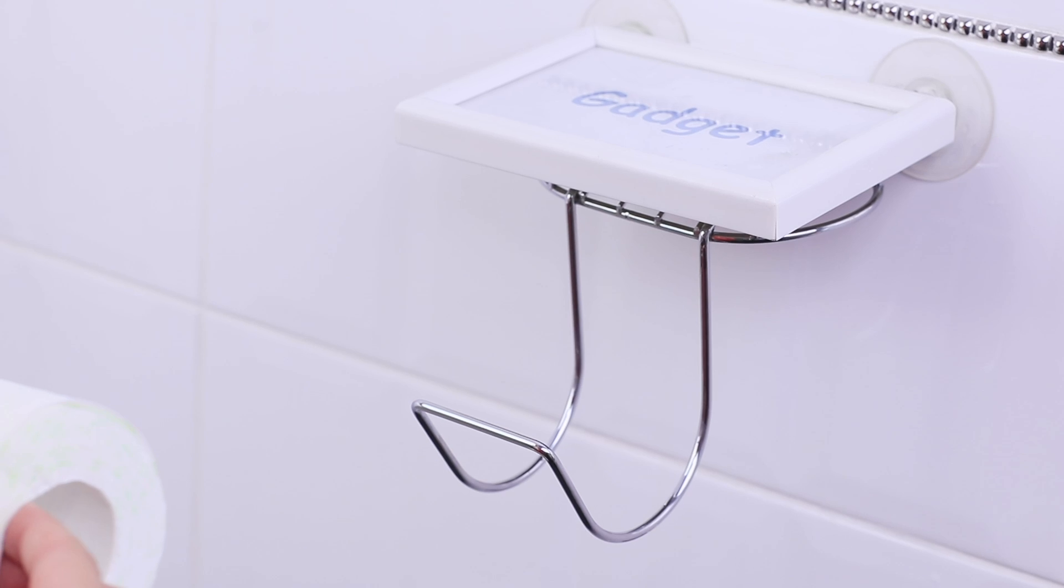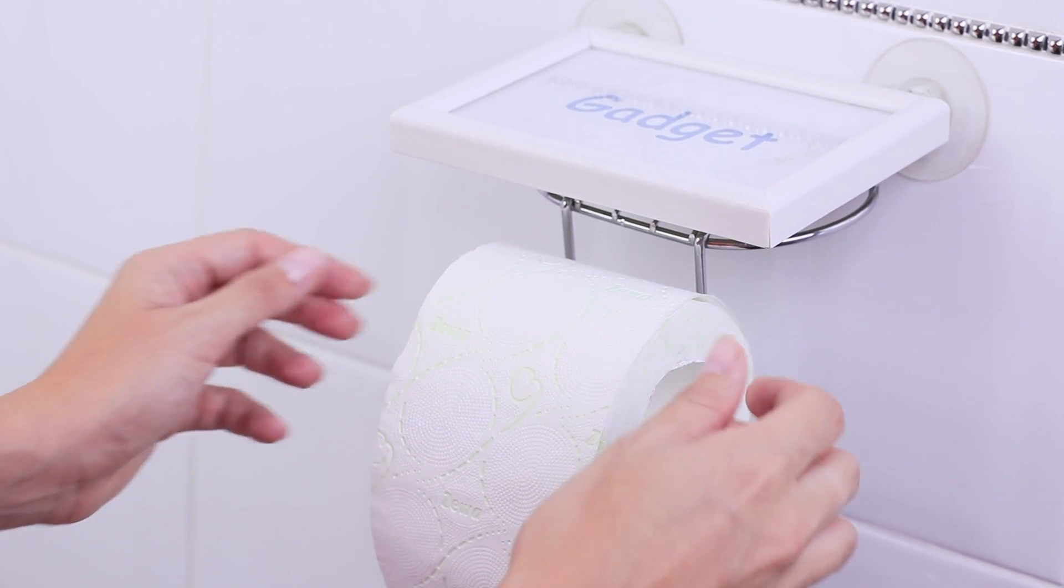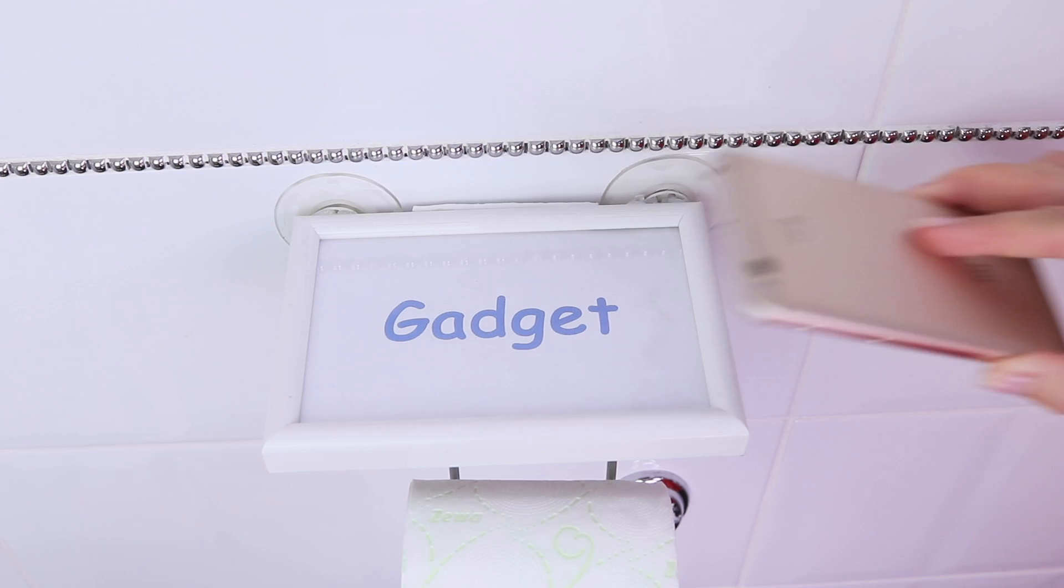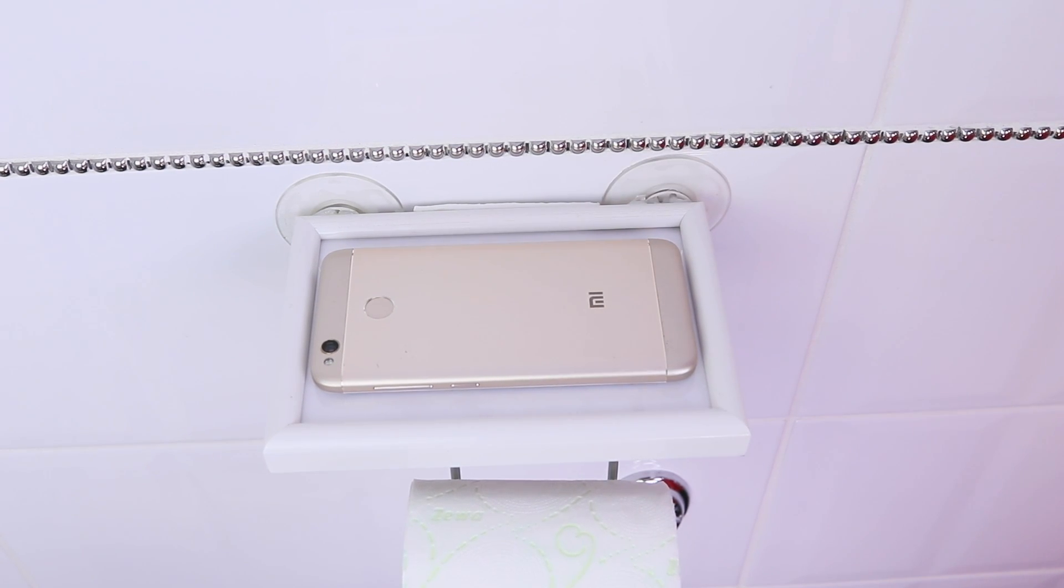Voila! You got a two-in-one holder! Put a roll of toilet paper on the hook of the soap dish and your phone in the frame! Admit it! You have always wanted a phone stand like this, right?